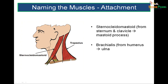Naming muscles by attachment: sternocleidomastoid — the mastoid process is where it attaches above, with sternal fibers and clavicular fibers. Cleido stands for clavicle. Another example is the brachialis, which lies in the arm and is hence called brachialis.